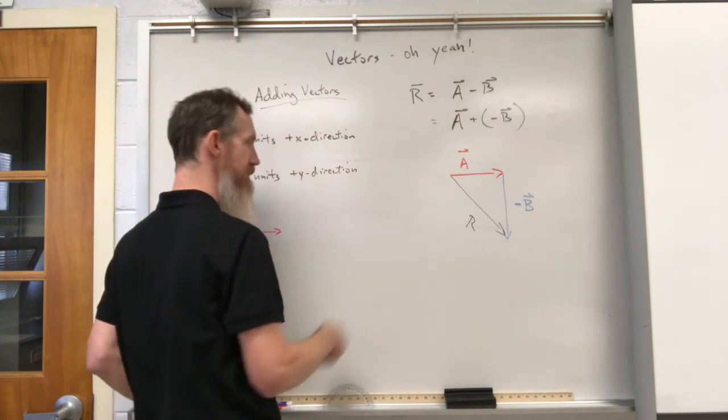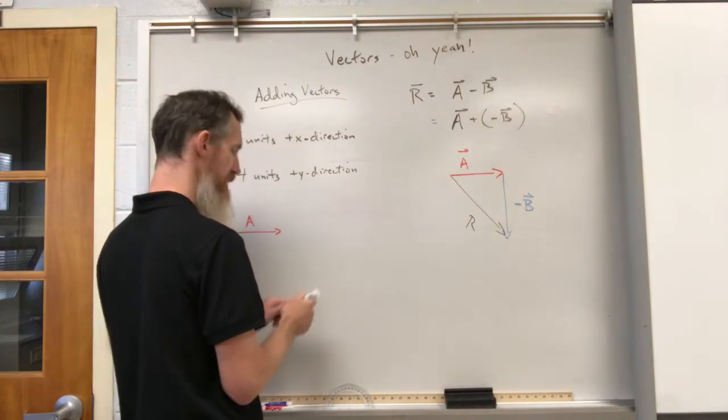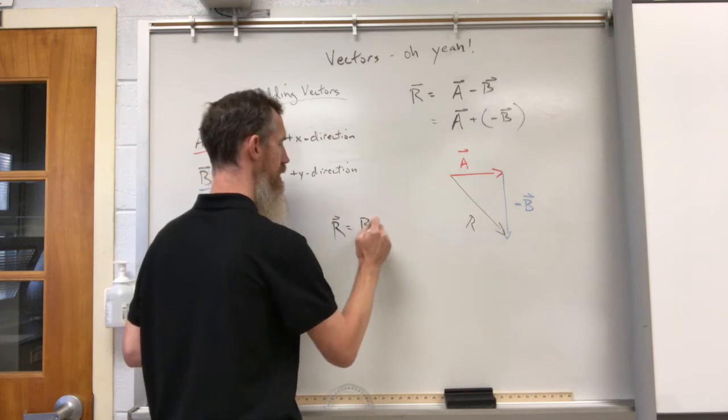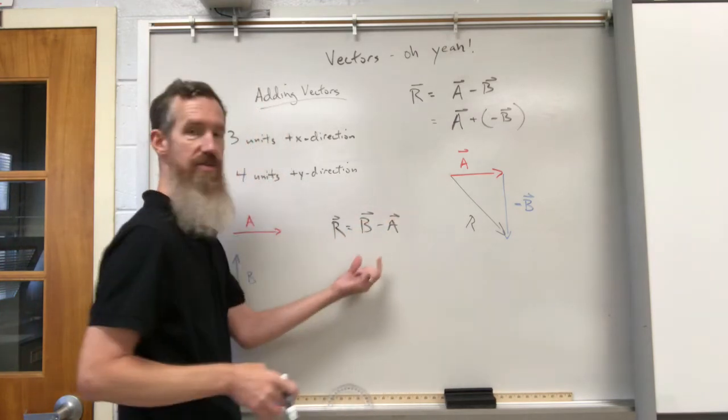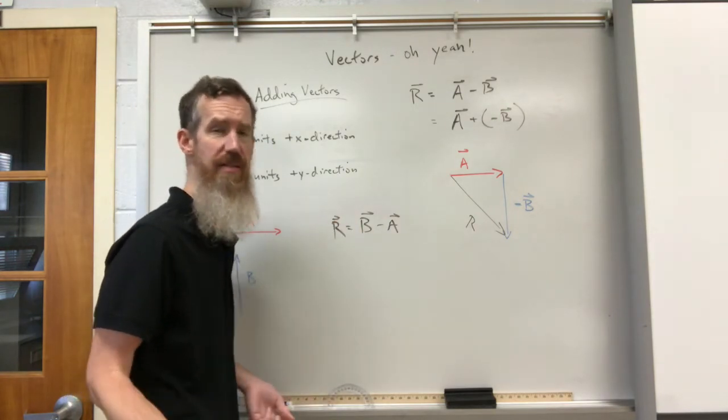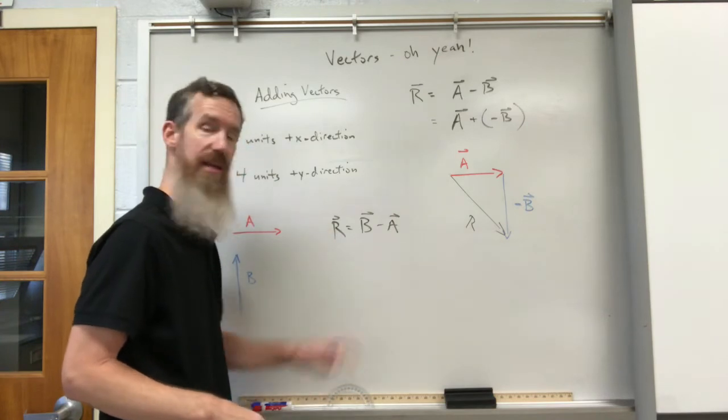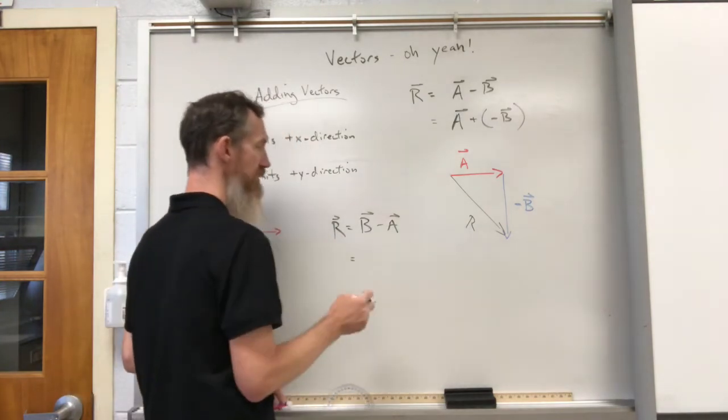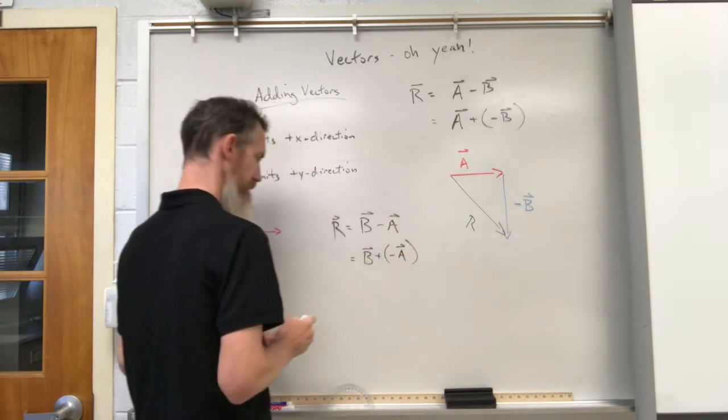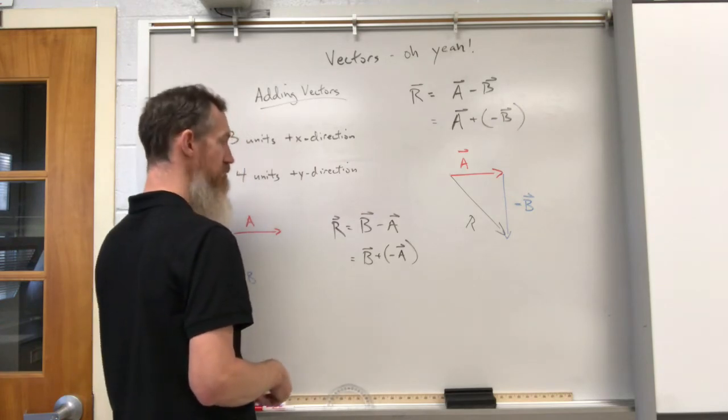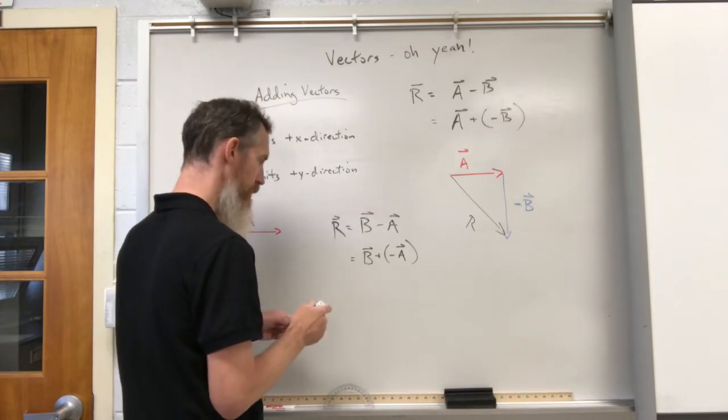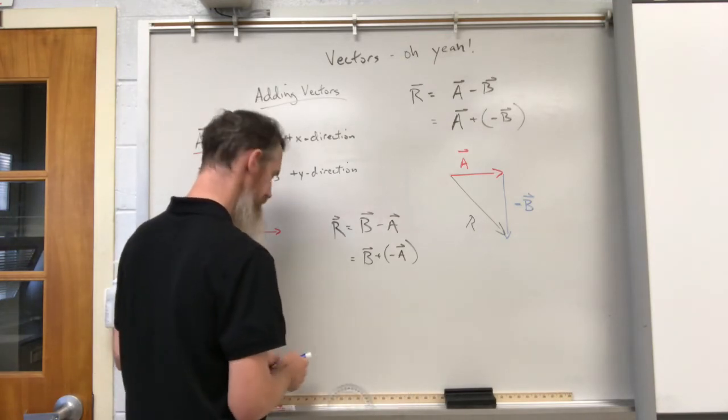What I want to also show you though is this situation would be different than this situation. Because we're allowed to add vectors in any order, right? We were saying earlier that if we added vector A plus B and added vector B plus A, we get the same result. But that gets a little tricky when negatives are involved. So I want to point this out. Really, this is B plus minus A.